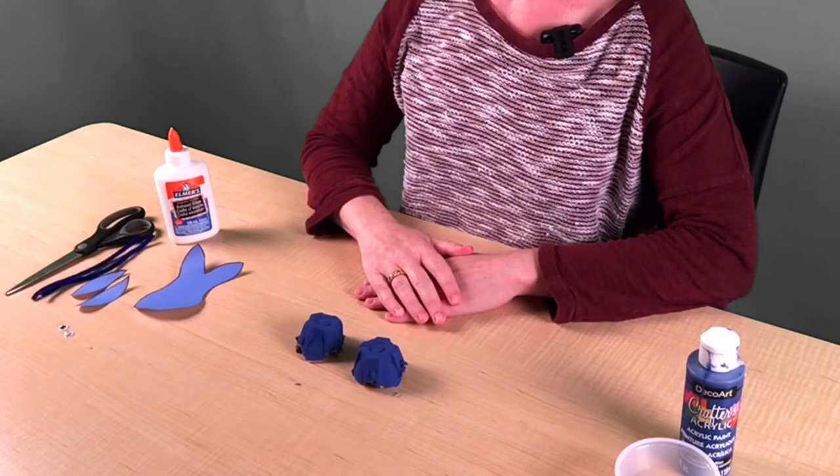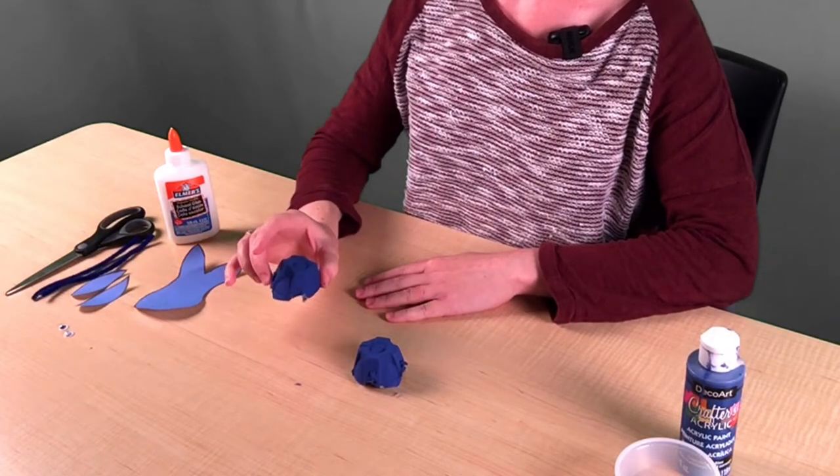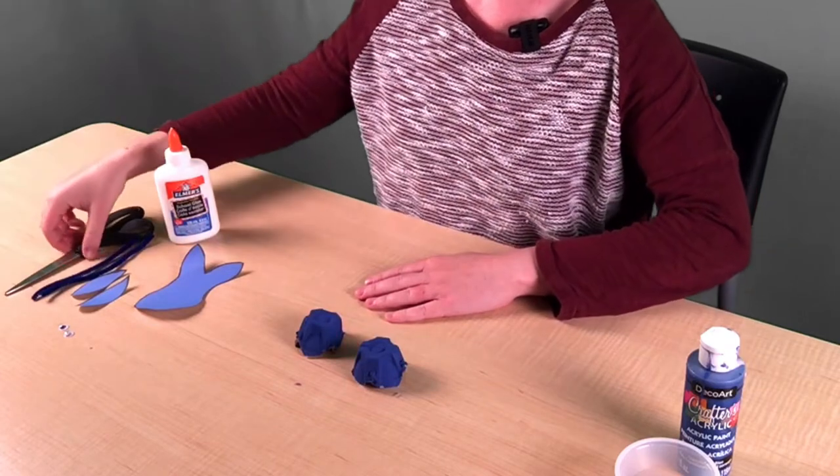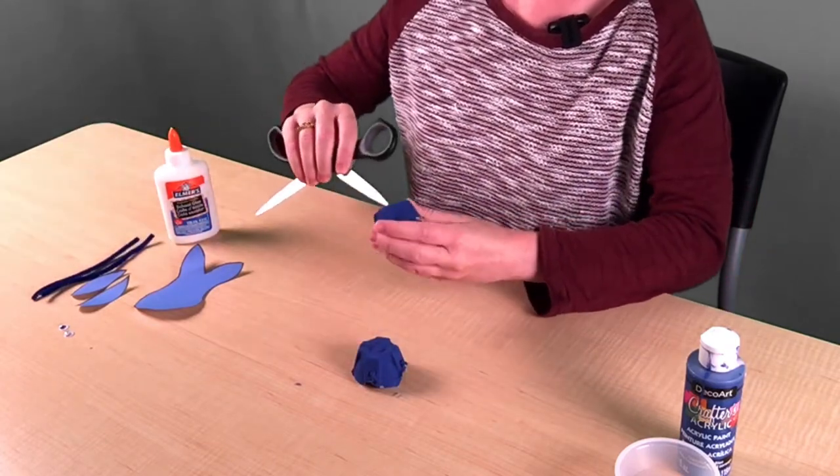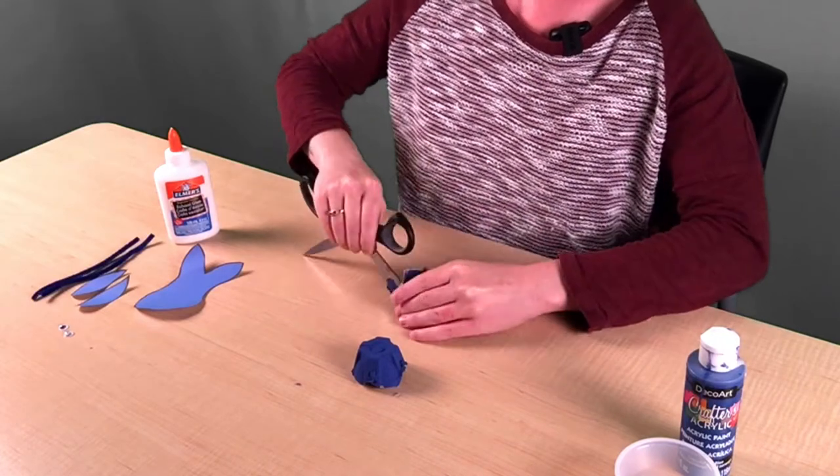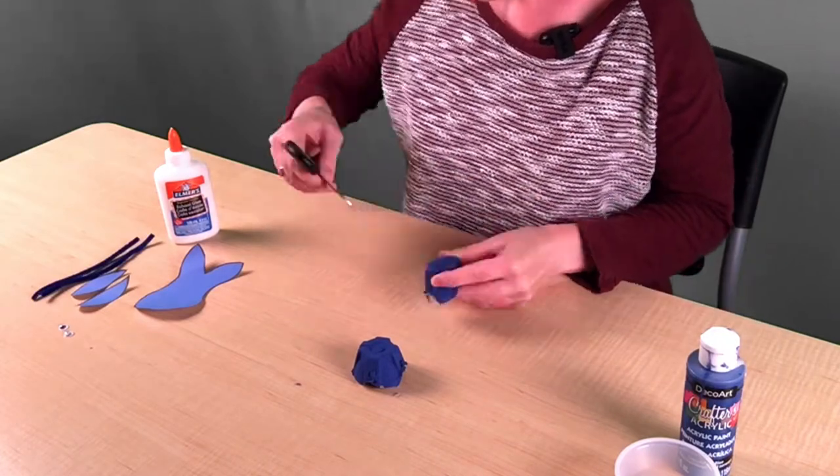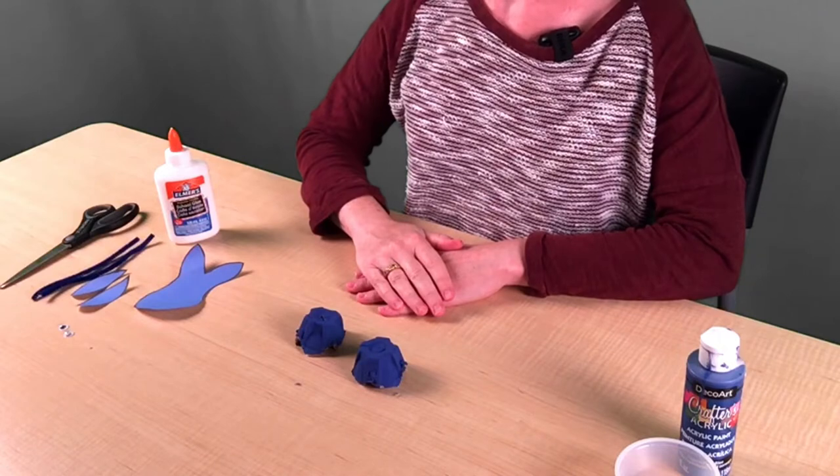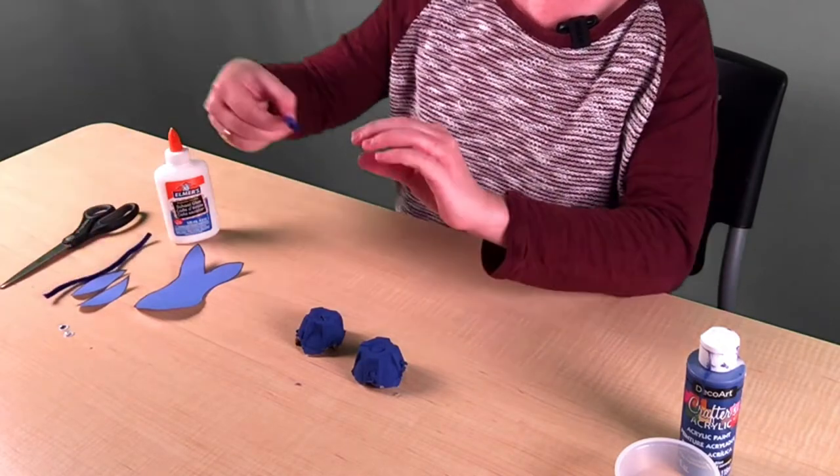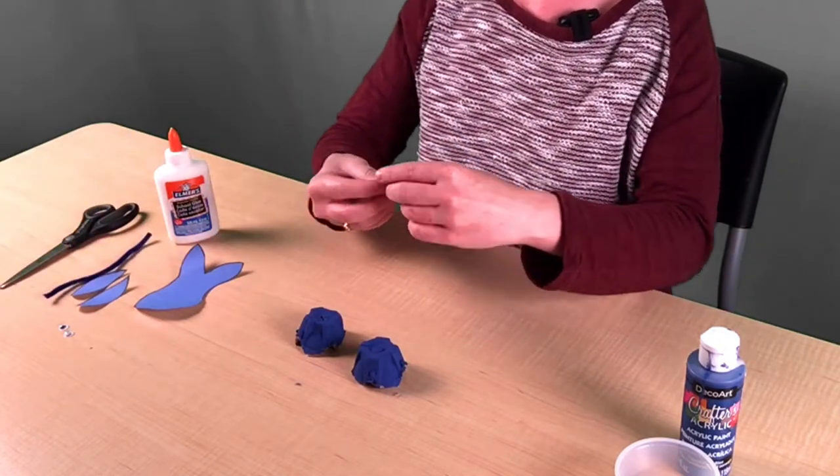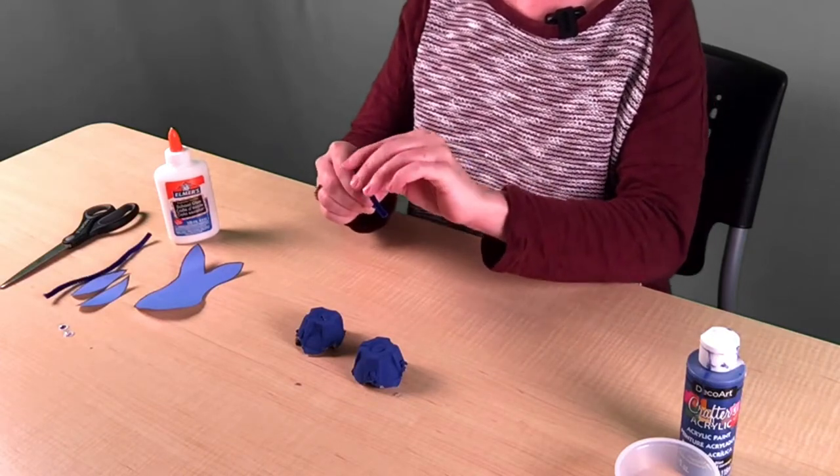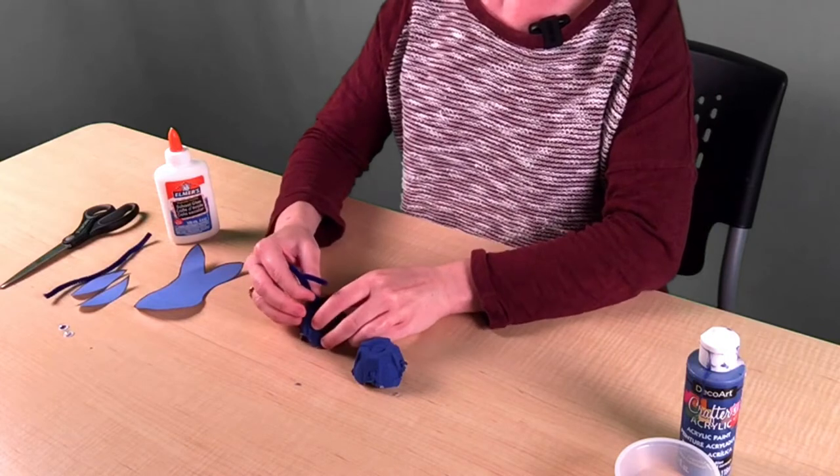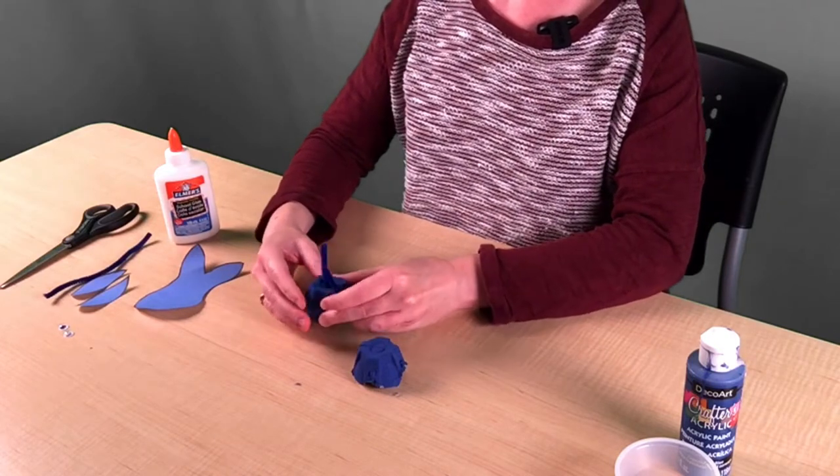When our egg cartons have dried, we're going to take one of them and poke a hole at the top with some scissors. Then we're going to take a piece of our pipe cleaner and bend it so that for our egg carton sea creature, which is a whale, it looks like a blowhole coming out of the top.